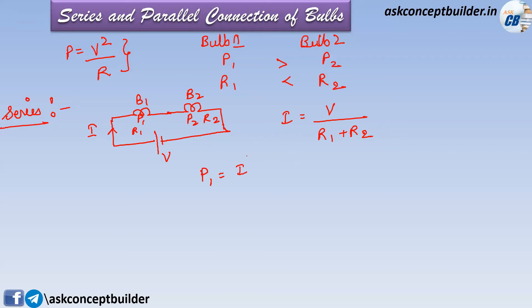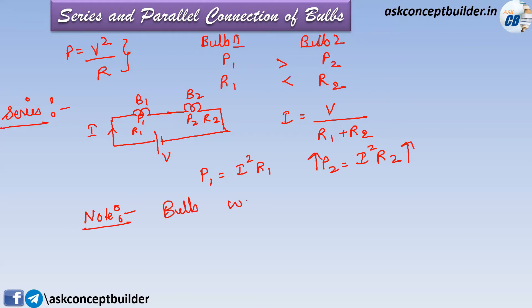The heat dissipated by bulb 1 is P1 = I² × R1, and the heat dissipated by bulb 2 is P2 = I² × R2. Since R2 is greater than R1, the heat dissipated by bulb 2 will be more than bulb 1. So we can see that the bulb with the lower power rating will glow brighter in series.